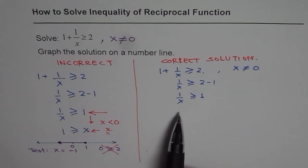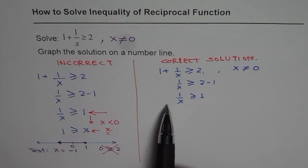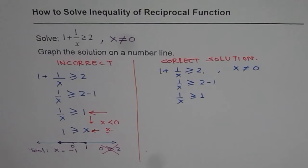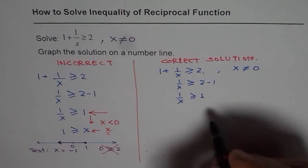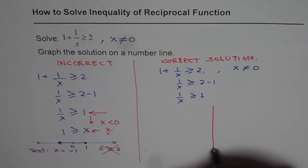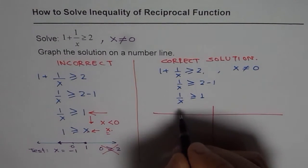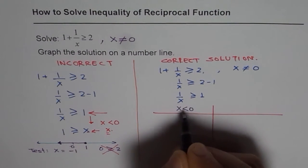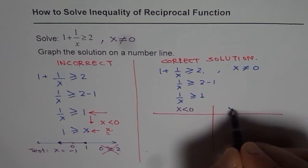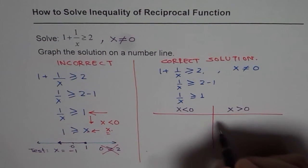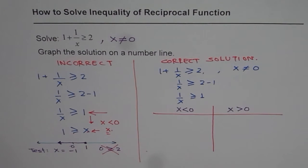Now the important thing here is that x could be negative or it could be positive. Therefore at this stage what we should do is we should provide two solutions. One where x is less than 0 that means x is negative. And where x is greater than 0 that means x is positive. x equals to 0 is not valid.